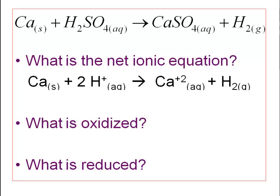Now with the net ionic equation, let's see who gained and who lost electrons. Calcium as a solid on the reactant side has a zero oxidation number — anything in elemental form has a zero. But on the product side, calcium has a +2. You become more positive when you lose negativity, so calcium lost electrons and became +2. Hydrogen starts positive on the reactant side and becomes zero in the product as a diatomic element, so it must have gained electrons to neutralize that positive charge.